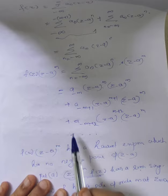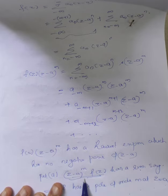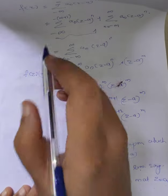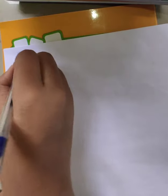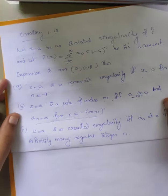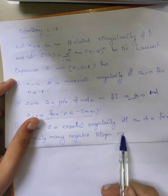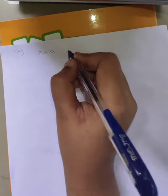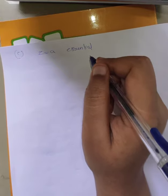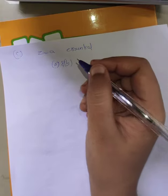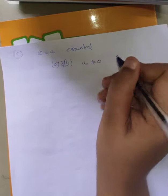The converse part is obtained by retracing these steps: if f has a pole of order m at z equal to a, then (z minus a)^m f(z) has a removable singularity, which implies a_n equals 0 for n less than or equal to minus(m+1). Now we prove part (c): z equal to a is an essential singularity if and only if a_n is not equal to 0 for infinitely many negative integers n. If z equal to a is an essential singularity, it is neither removable nor a pole, so from parts (a) and (b) it is clear that a_n must be nonzero for infinitely many negative integers n.